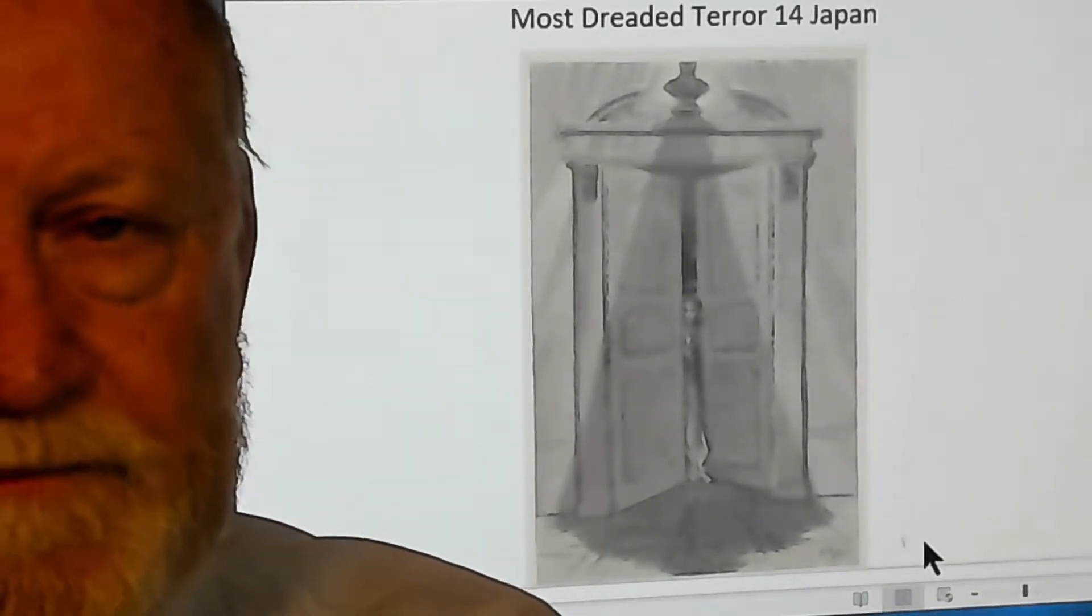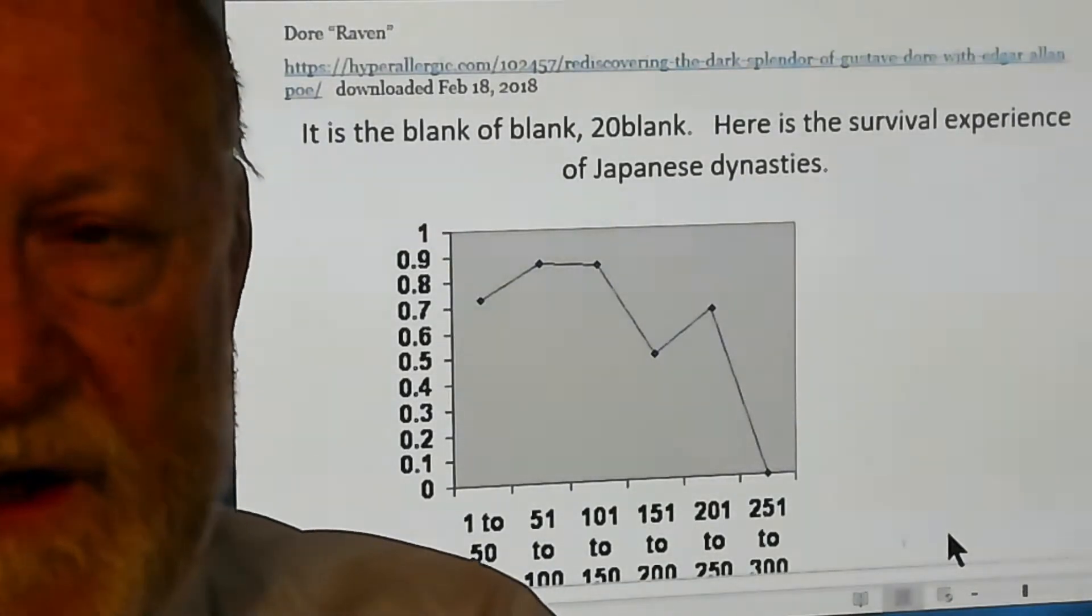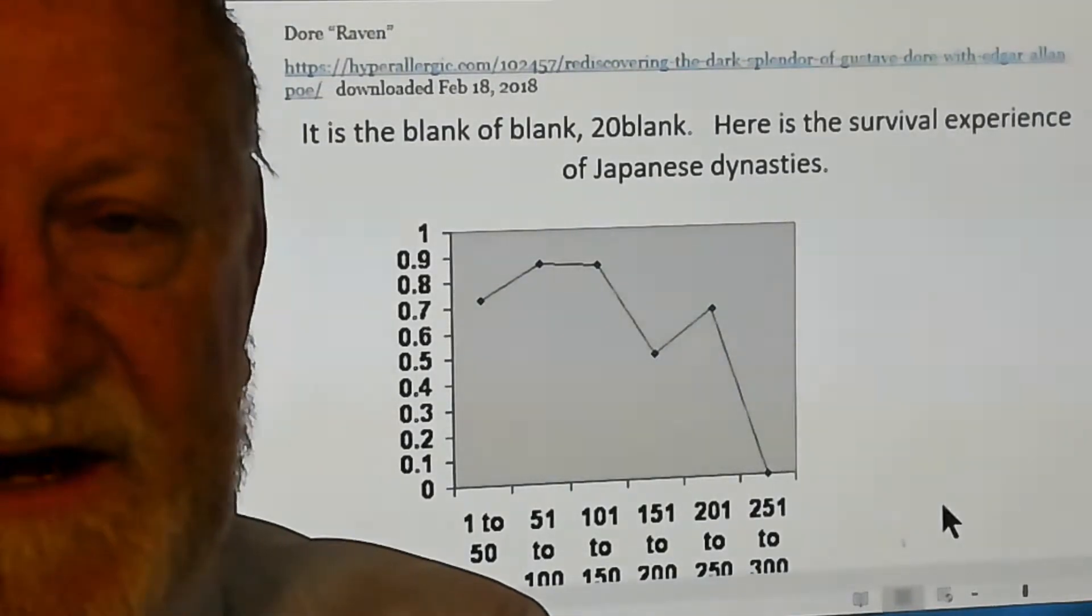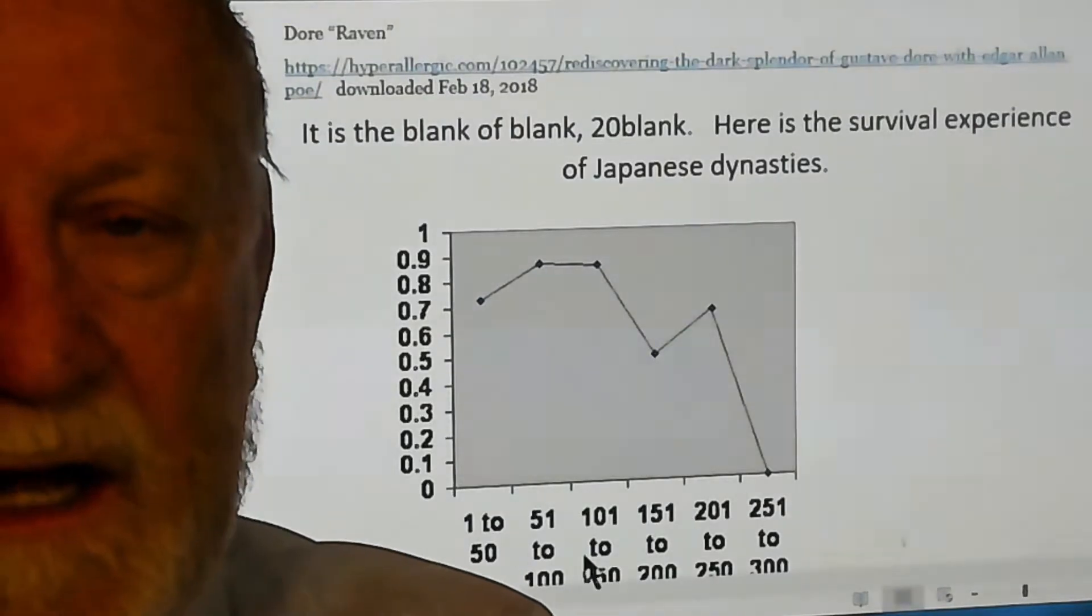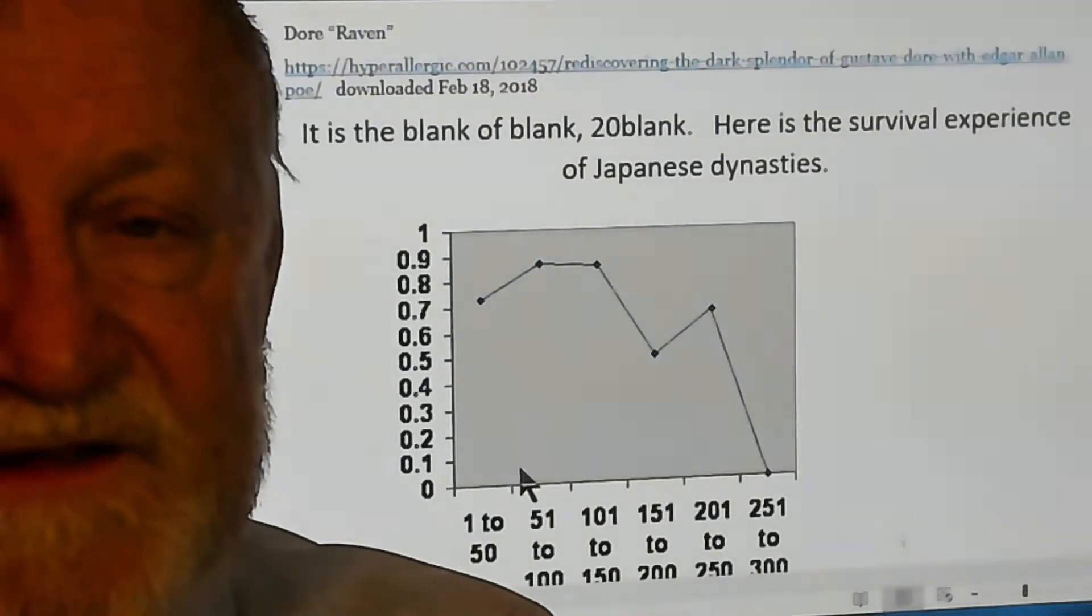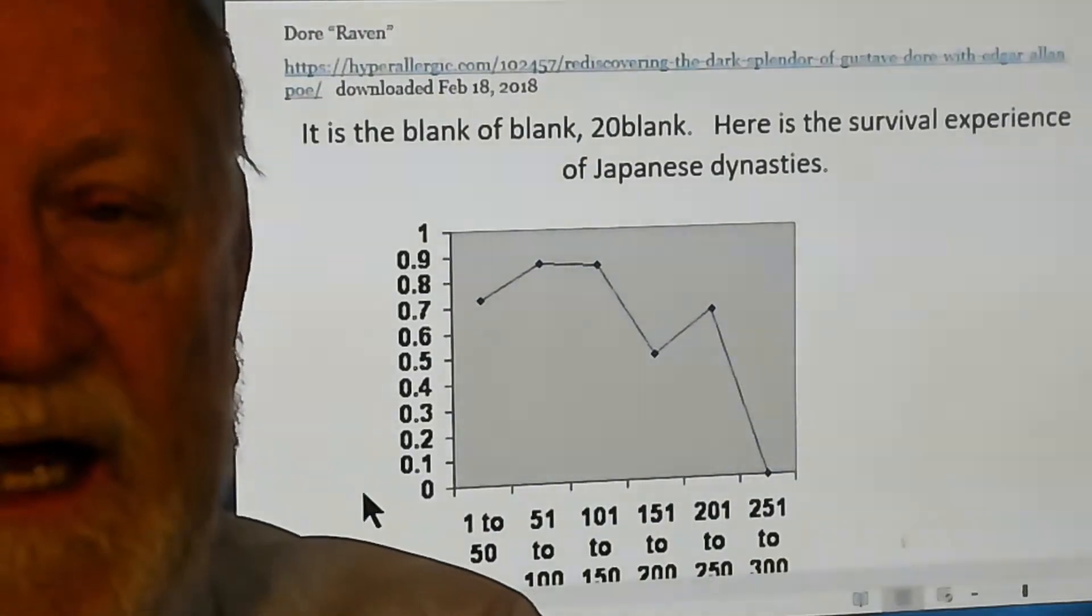Here we are, you're accustomed to these coordinates. The horizontal axis is years since the dynasty was founded, the vertical axis is the chance of the dynasty going on. This is Japan.